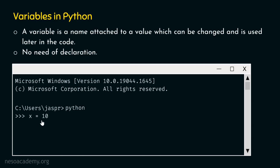Let's type x equal to 10. x equal to 10 means variable x is assigned to value 10. Or we can say name x is attached to value 10. So in place of using this value directly in our code, we can use this variable x.